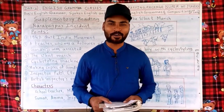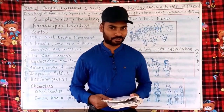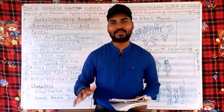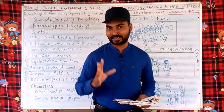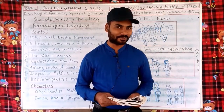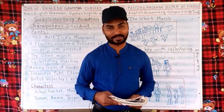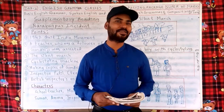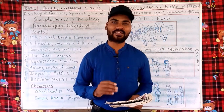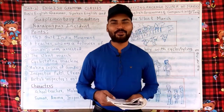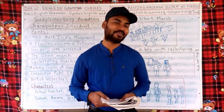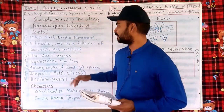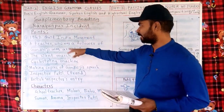Dear students, so far we studied composition type topics in the first part with six lessons, then eight poems in the poetry section. Now we are going to study four supplementary reading lessons. These lessons are meant to be read by students themselves, but I would like to give an introduction. Let's have a look at the first one: the Narayanpur Incident.